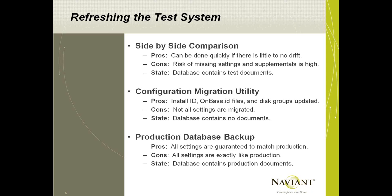There are several different methods available to refresh the test system. The first is side-by-side comparison, where you pull up the config tool on your production system and your test system side-by-side and compare each setting one by one. If you have very little drift between your two systems, this can be done quickly and can be practical. The downside is that if you are not 100% sure where the differences are, the risk of missing a setting or supplemental information is pretty high. We don't generally recommend this method, but it is available. The state of your database and disk groups remains as-is with all your test data.